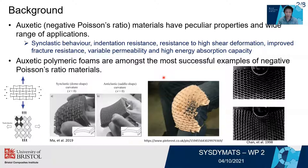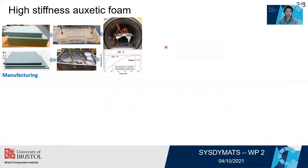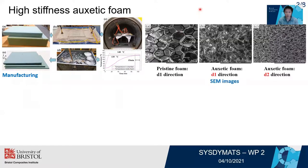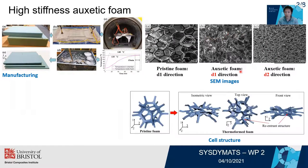Among different auxetic materials, the auxetic polymeric foam is the most successful example because it can be converted directly from commercially available foam material. In the first research, we developed a high-stiffness auxetic foam using a vacuum bag autoclave at high temperature and high pressure. It was found that the inner structure of the auxetic foam is much denser than the preceding one, and also the auxetic foam shows very strong transverse isotropic property.